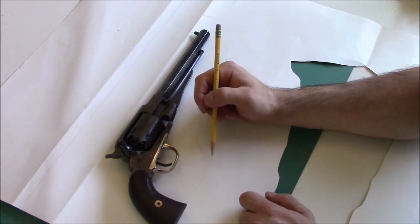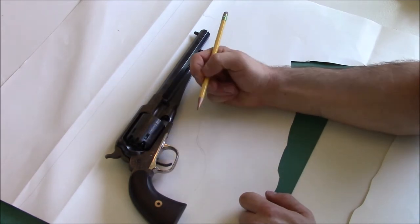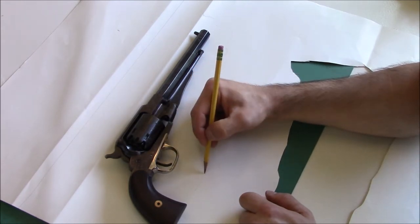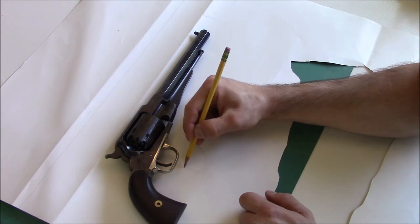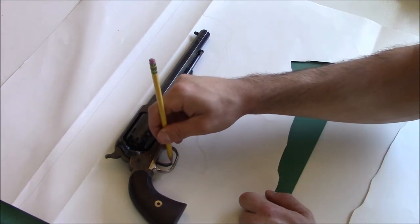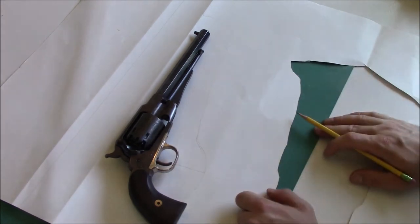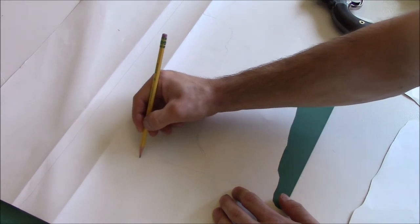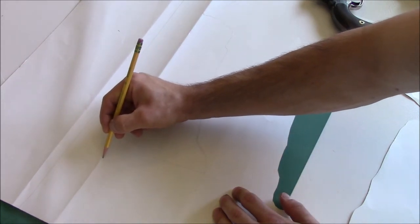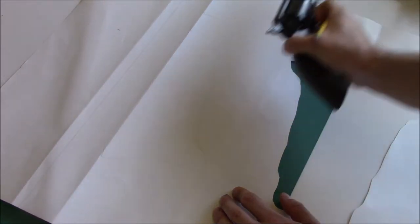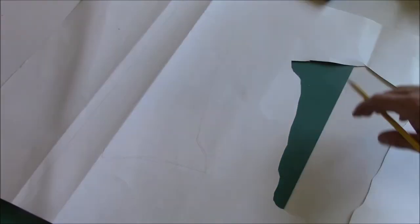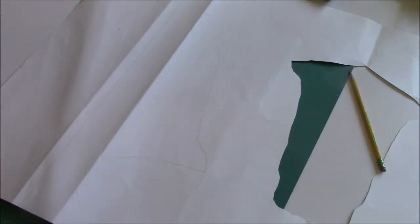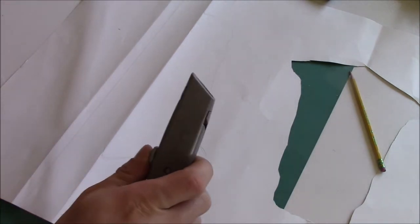We want a bit of the trigger guard sticking out of this holster. So what I'm going to do is just draw a line from about here down. And now you could kind of guess. I'm going to draw a line right to the edge. What I'm going to do now is take a box cutter and go along the marked line and just cut it out.